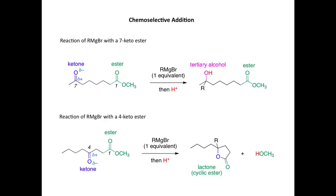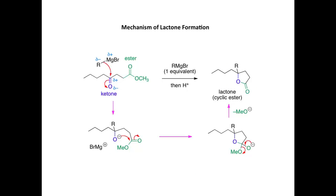Let's now look at the mechanism for formation of that lactone, that five-membered cyclic ester. As we would expect, in the first step the Grignard reagent acts as a nucleophile and selectively attacks the ketone carbonyl in a nucleophilic addition. This forms an alkoxide ion, which is now close enough in proximity to attack the carbonyl group of the ester. We get nucleophilic attack on the carbonyl to form an unstable alkoxide ion. We form the five-membered ring in the cyclization reaction, and this unstable alkoxide ion breaks down with release of the methoxide ion to form the five-membered cyclic ester ring, or lactone. On protonation, we protonate the methoxide ion to form methanol as a second product.